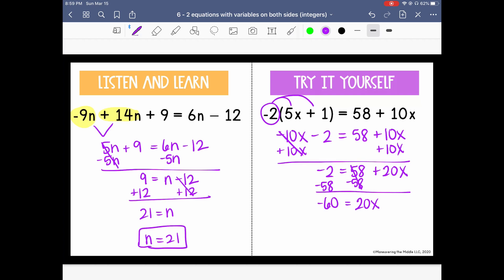The last step is to undo the multiplication by dividing both sides by 20. So we have negative 3 equals x or x equals negative 3.